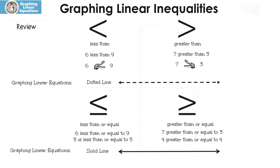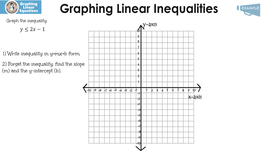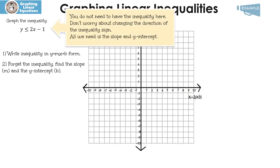Let's get to it. We're going to graph the inequality y is less than or equal to 2x minus 1. The first thing we need to do is write the inequality in y equals mx plus b form. It's already in that form, so we're going to forget the inequality for a minute and find the slope m and the y-intercept b. My slope is 2 and my y-intercept is negative 1.